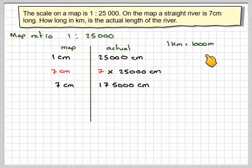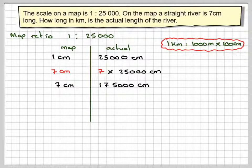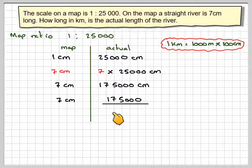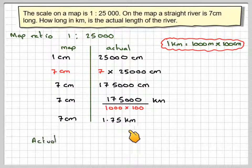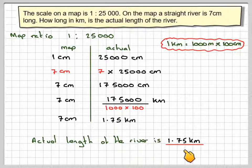1 kilometre is equal to 1,000 metres times 100 centimetres. So 7 centimetres will be 175,000 divided by 100,000 kilometres. If we work that out, we get 7 centimetres is 1.75 kilometres. So the actual length of the river is 1.75 kilometres.